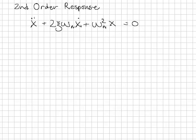I'm only looking at the transient response of the system. The term ζ is called the damping ratio, ωₙ natural frequency.